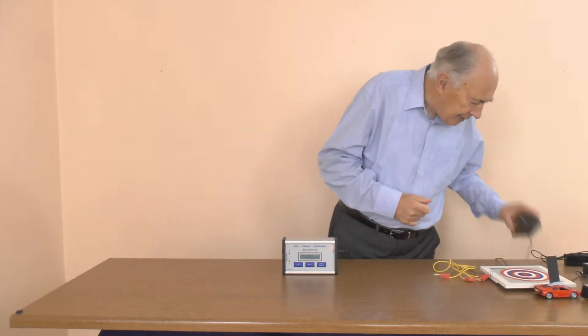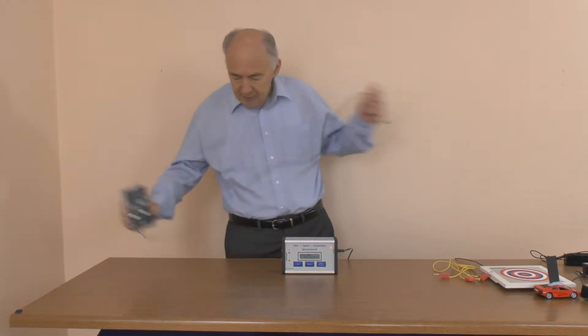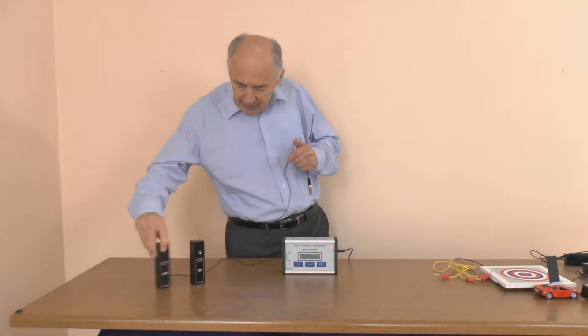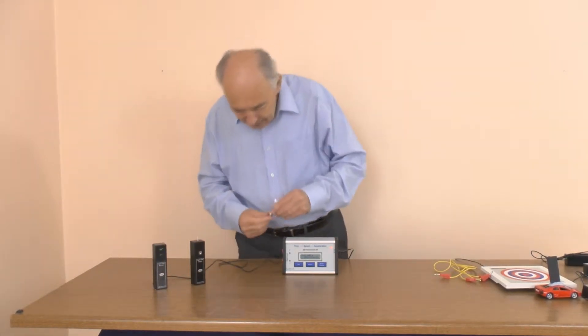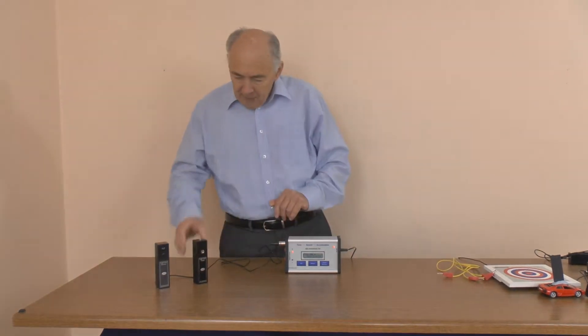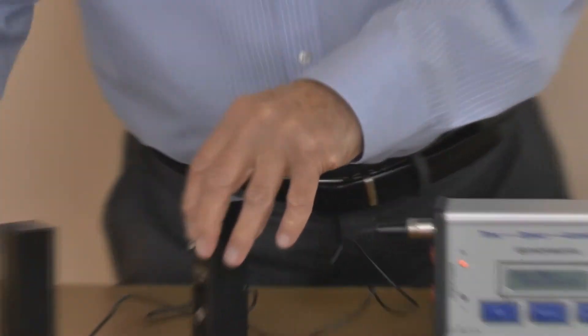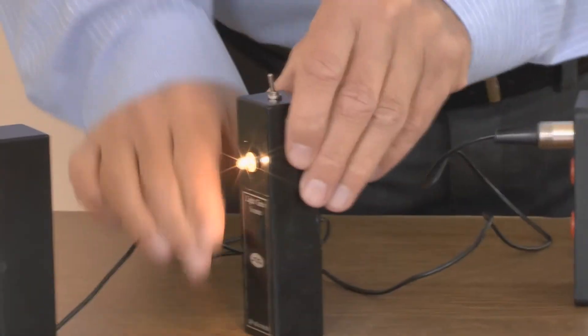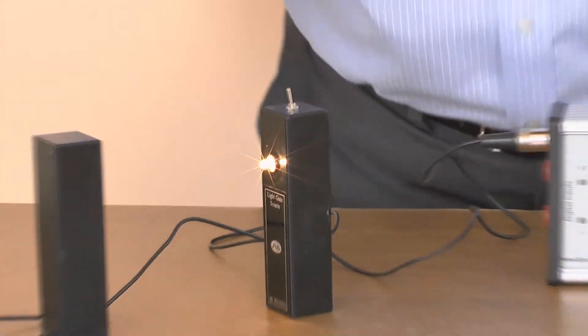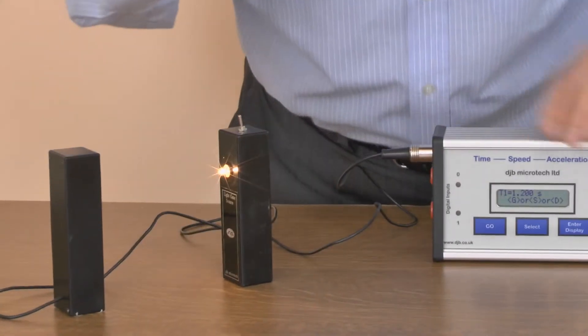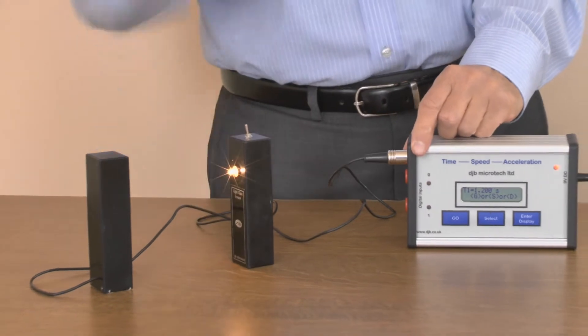We can connect to our TSA light gate, and if I switch that on, check that we're aligned, and I can see that the light is coming on and off.